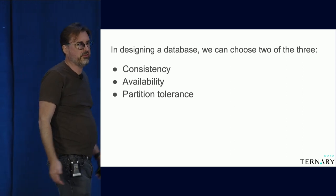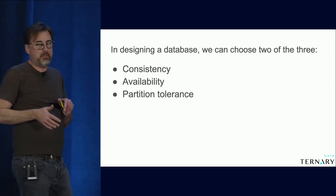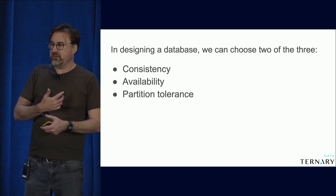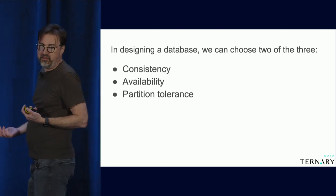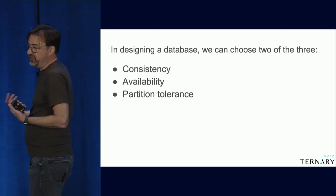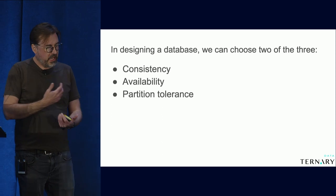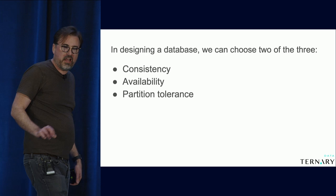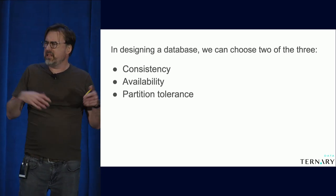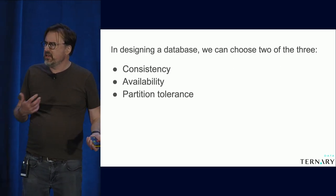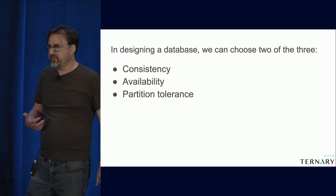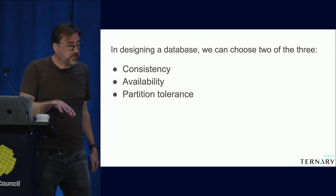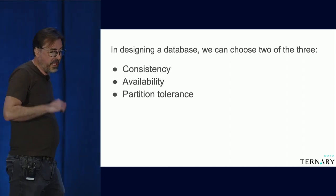Availability means that I'll always get a response. It might be an incorrect response if my database doesn't satisfy the first bullet point, but I will never get an error. Partition tolerance has to do with a distributed system. Anytime you have a distributed system, you're going to get partitions, meaning nodes can't communicate. This happens even inside your own data center. Partition tolerance basically means that your database behaves correctly when there's a lack of communication. The big idea of the CAP theorem is that you can't have all three of these.